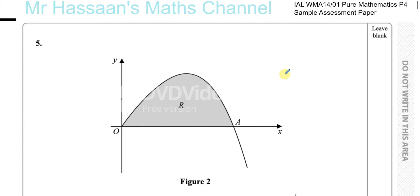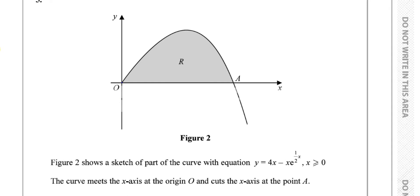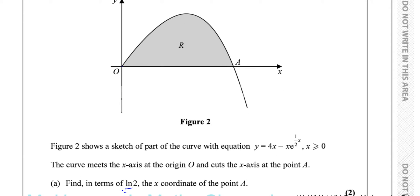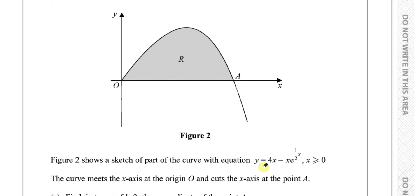Question number 5 from the Pure Mathematics P4 sample assessment paper from International A-Level at Excel. In this question we are asked first to find, in terms of ln2, the x-coordinate of the point A for this curve, which has the equation given and tells us that the curve meets the x-axis at the origin and again at point A. We need to find the coordinates of point A.